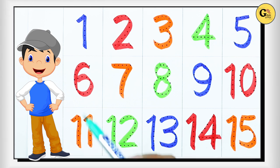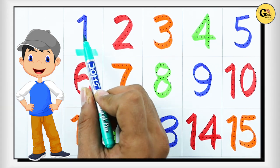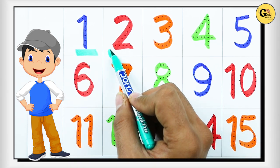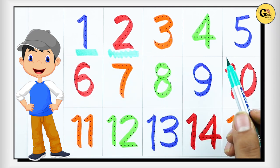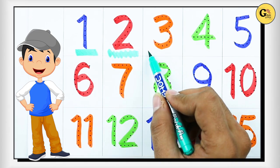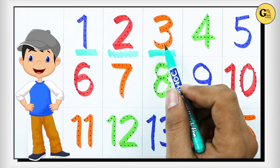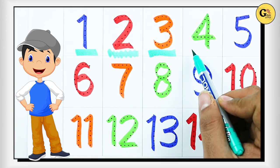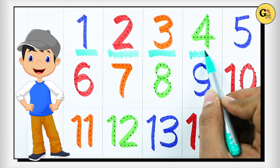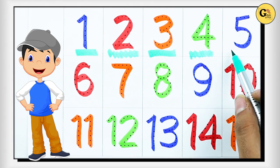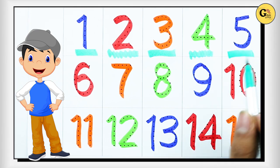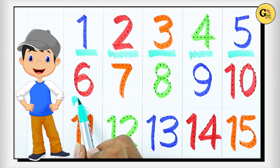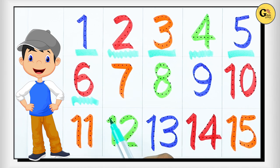It's number 1 with blue color, number 2 with red color, number 3 with orange color, number 4 with green color, number 5 with blue color, number 6 with red color.